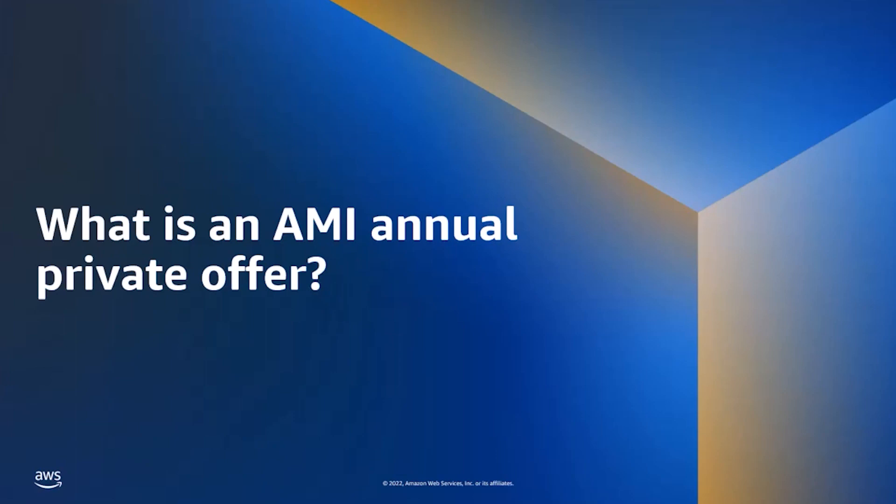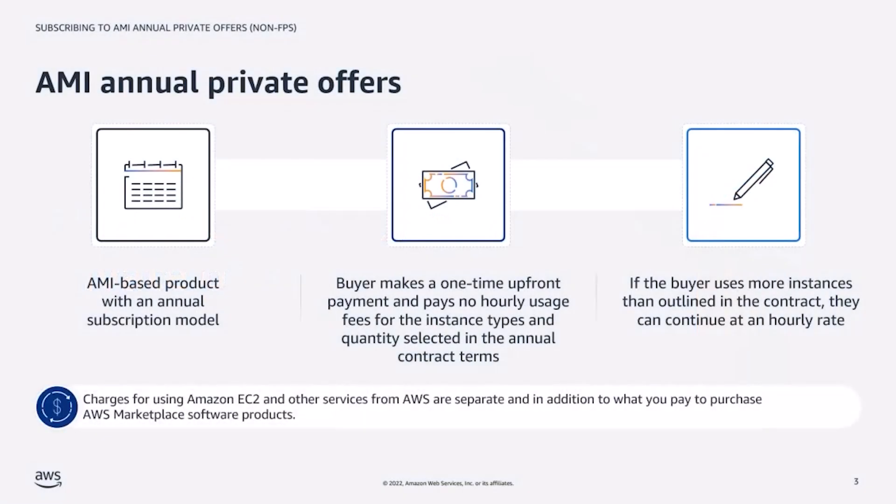What is an AMI annual private offer? AMI based software products can offer an annual subscription pricing model in which the buyer makes a one-time upfront purchase for the desired number of instances and types, then pays no hourly usage fees for the instance types and quantities selected in the annual contract terms.